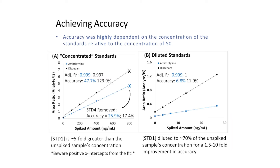Another thing that will tip you off if your standards are too concentrated is if you're noticing positive x-axis intercepts from the fit, when you should expect a negative x-axis intercept. So if you're having difficulty achieving good accuracy with standard addition, check the concentration of your standards relative to the concentration of the sample you're trying to quantitate.